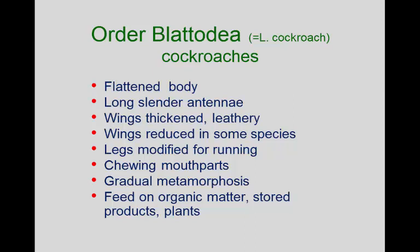Our next group is the Blattodea — the cockroaches. For lecture I'm going to combine the Isoptera, the termites, with them. The true cockroaches have dorsoventrally flattened bodies and very long, slender antennae. The wings are orthopteroid: the front wing is elongated and blade-like, and the hind wing is very broad and folded like a Japanese fan. Cockroaches have that kind of wing.